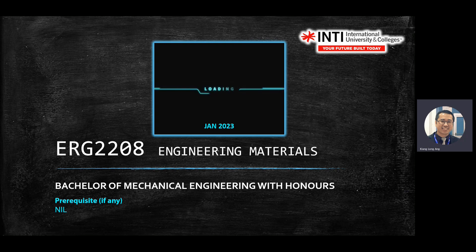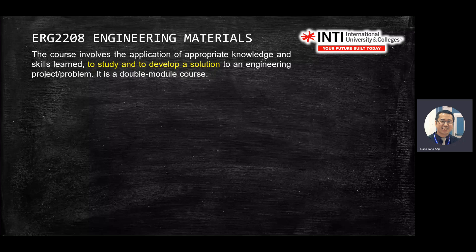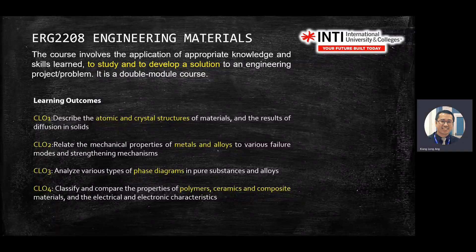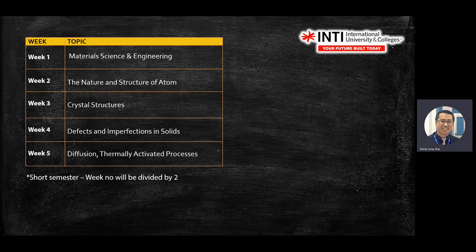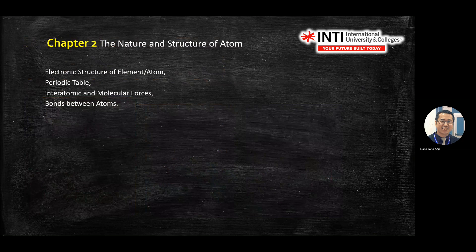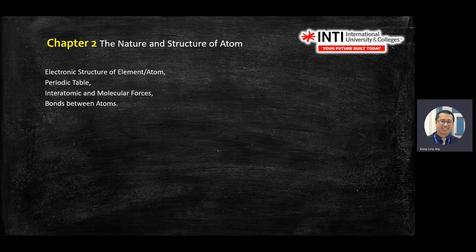We completed chapter one last week, now we go into chapter two. Chapter two will be answering questions for your learning outcomes. Number one: describe atomic and crystal structure for the material. This chapter will be in your test one question. We will look into atoms, recalling a little from your chemistry. Pay attention to the periodic table, how to read it, because you will see one attachment or appendix in your test one and also your final exam.